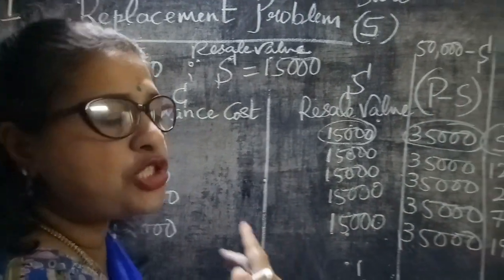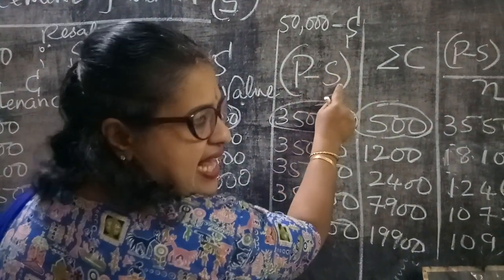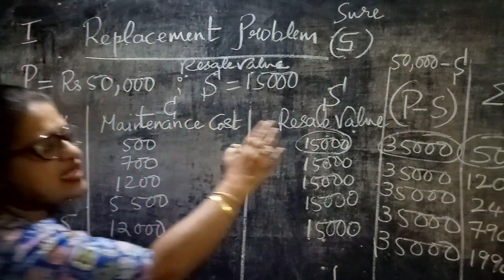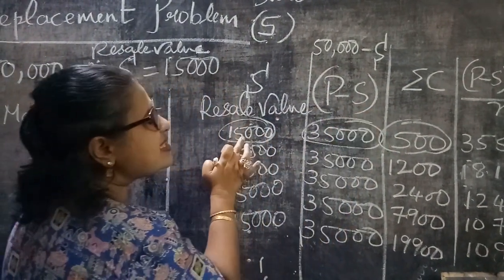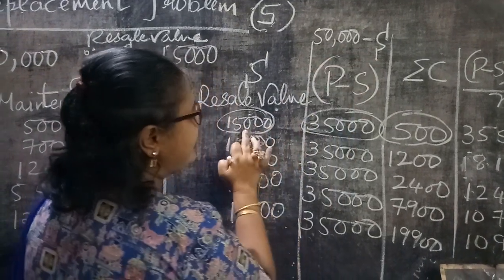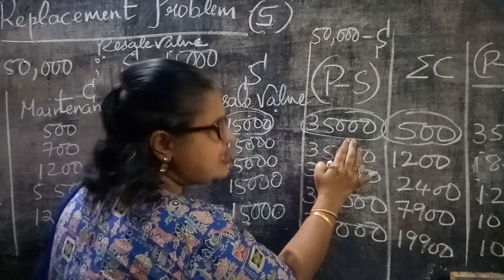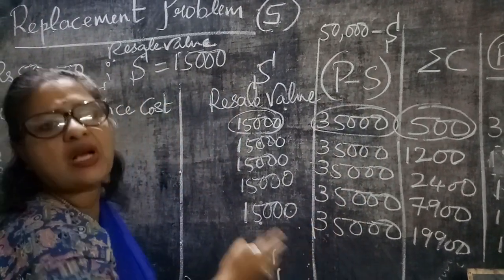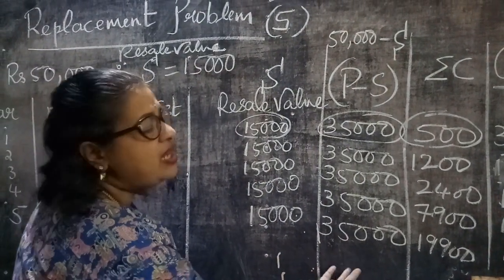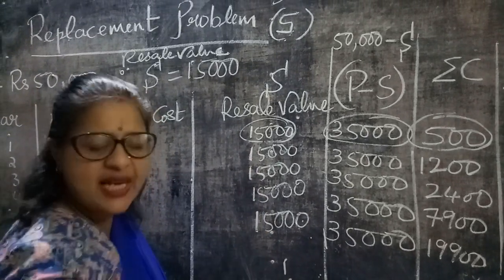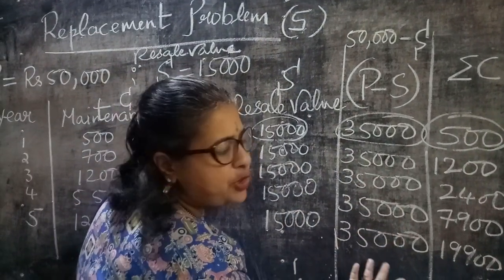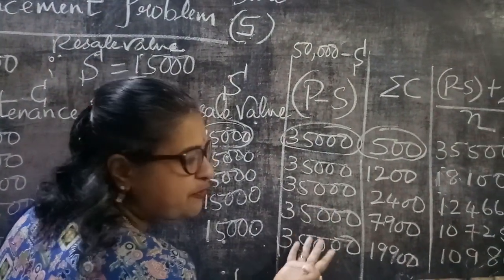Now, what you have to write next is the S column, and you write 15,000 everywhere in that column. The next column you are going to write is P minus S. P is the purchase price, that is 50,000, minus the S column which is the scrap value. So P minus S is 50,000 minus 15,000 equals 35,000. Everywhere it is 35,000 because your scrap value is the same. If the scrap value were different for different years, then this column would have different values.